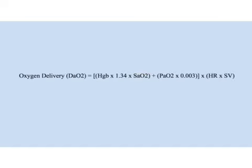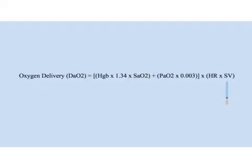Let's put it all together. Oxygen delivery is equal to the amount of oxygen bound by hemoglobin plus the amount of oxygen dissolved in plasma, times our cardiac output — heart rate times stroke volume.